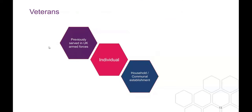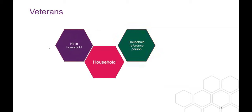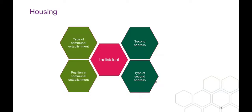For veterans, at individual level we get whether somebody previously served in the UK armed forces. We can also tell from the census where people are currently serving, and whether they're living in households or communal establishments. At the household level we get the number of veterans in the household and whether the household reference person is a veteran.